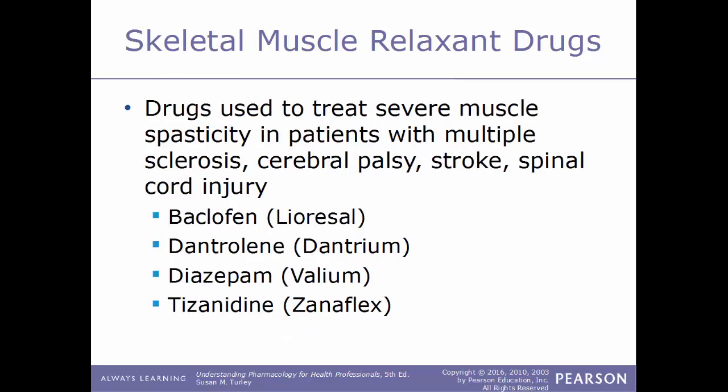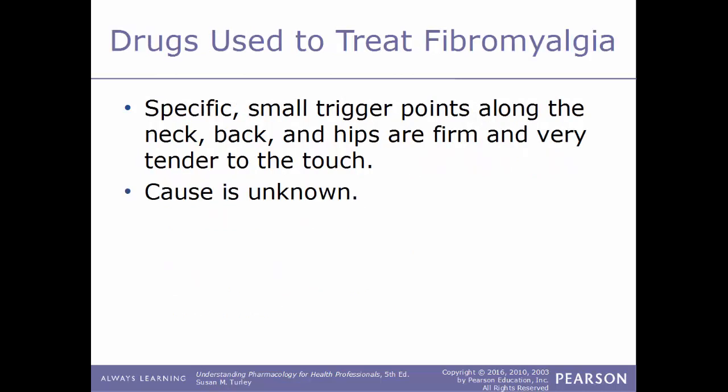Certain drugs are used to treat severe muscle spasticity in patients with MS, cerebral palsy, stroke, or spinal cord injuries. Examples include baclofen known as Lioresal, dantrolene known as Dantrium, diazepam known as Valium, and tizanidine known as Zanaflex.